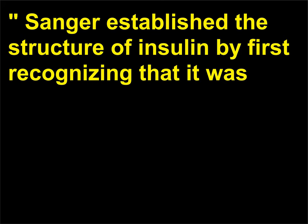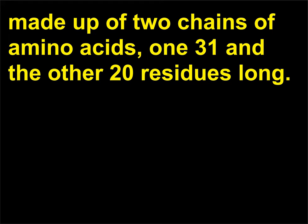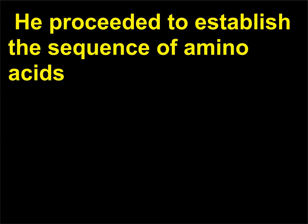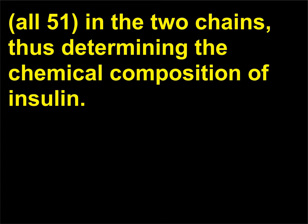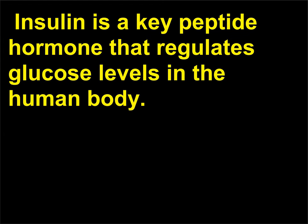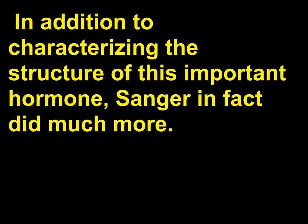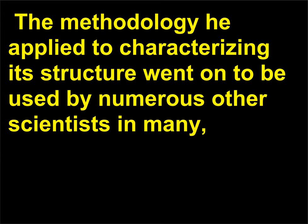Sanger established the structure of insulin by first recognizing that it was made up of two chains of amino acids, one 31 and the other 20 residues long. He proceeded to establish the sequence of all 51 amino acids in the two chains, thus determining the chemical composition of insulin. Insulin is a key peptide hormone that regulates glucose levels in the human body. In addition to characterizing the structure of this important hormone, Sanger in fact did much more. The methodology he applied to characterizing its structure went on to be used by numerous other scientists in many other situations to characterize protein structures.